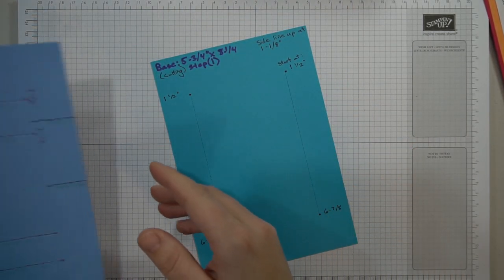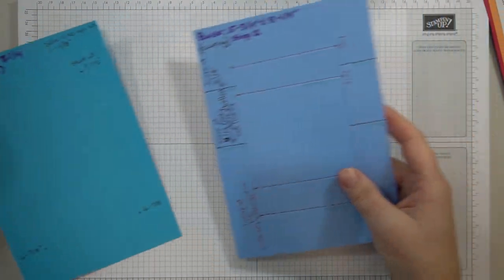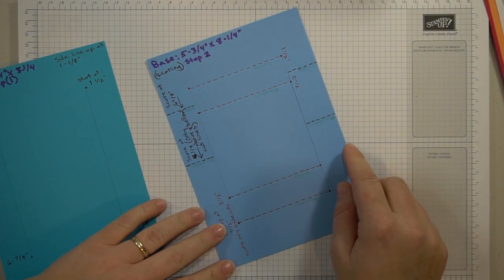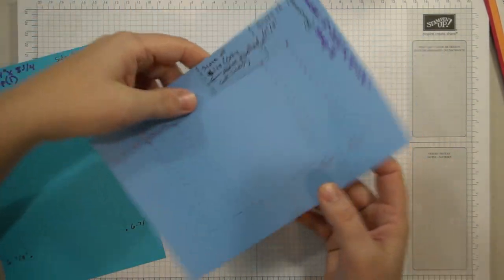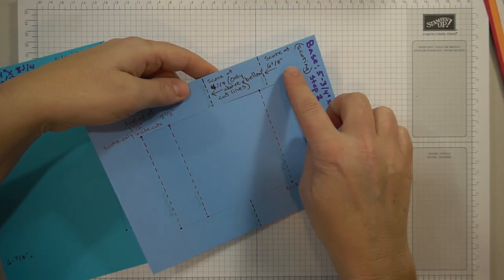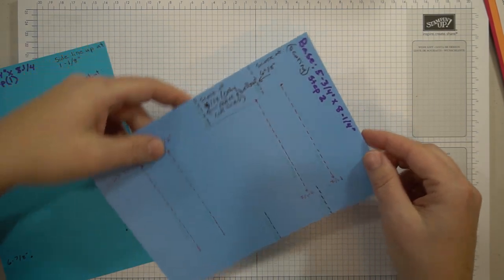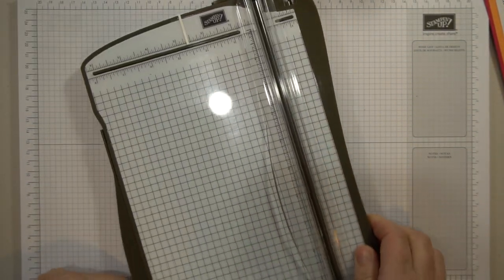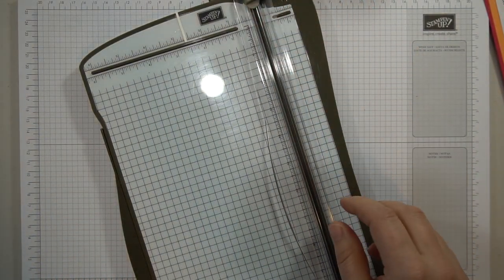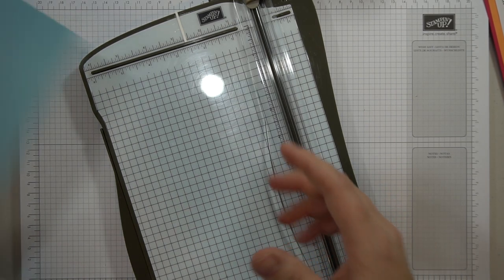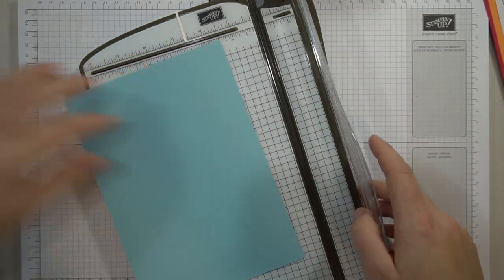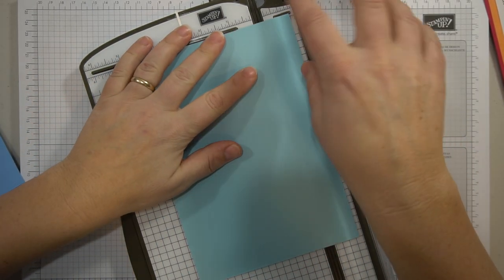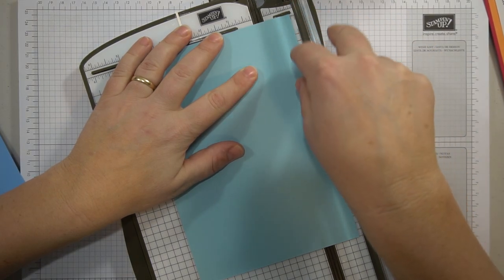And then I have a second template and this is step two. This is where I show where to score and where things are positioned. So I will bring in the stamping trimmer and we will do this step together. Bringing in my base here, I'm going to line this up at one and an eighth.